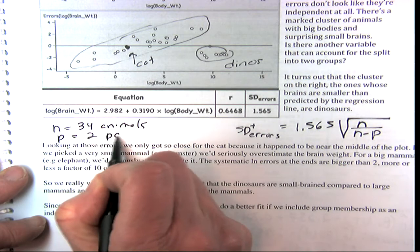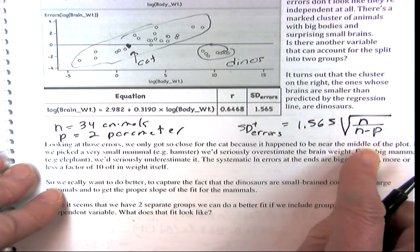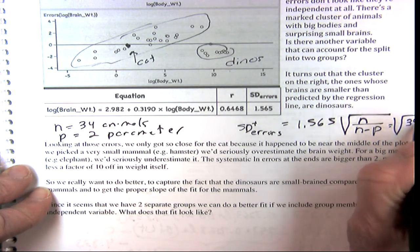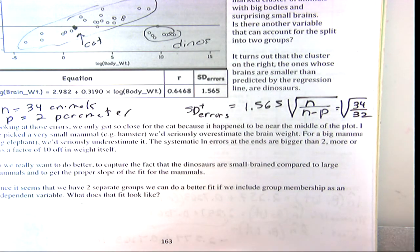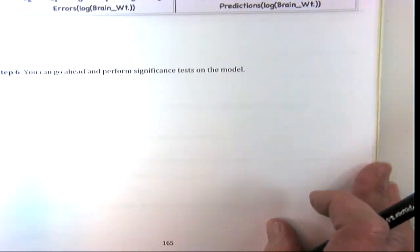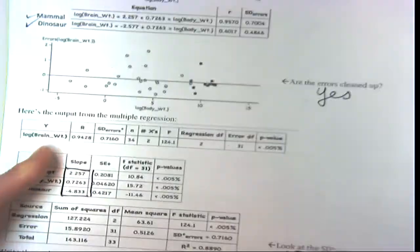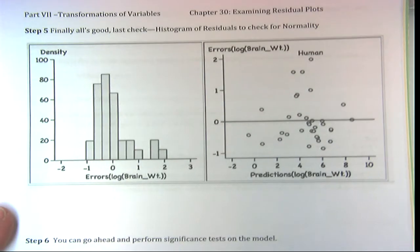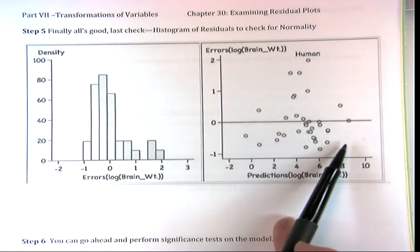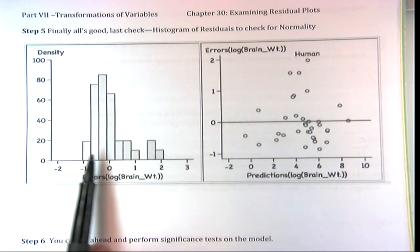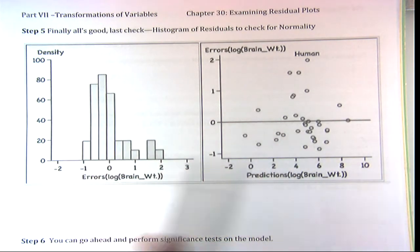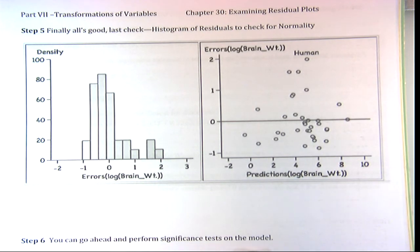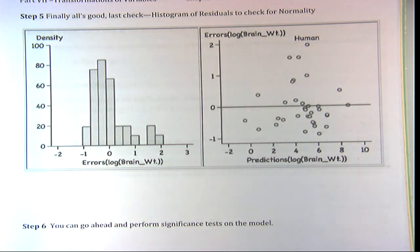When you have a log equation, these slopes translate into multiplicative changes of e raised to that power. You'll see this a lot more in logistic regression. Now the regression equation predicts a 90 kilogram mammal to have a brain weight of 251. And for a 90 kilogram dinosaur, it's 251 times e to the negative 4.833, which is approximately 2 — divided by 125.